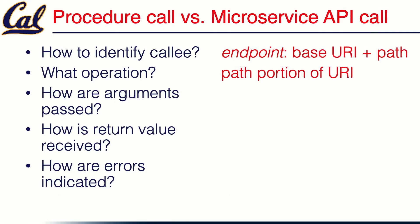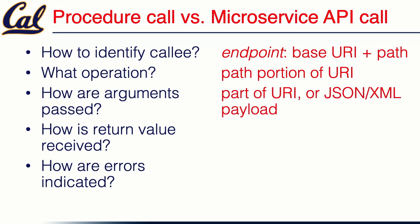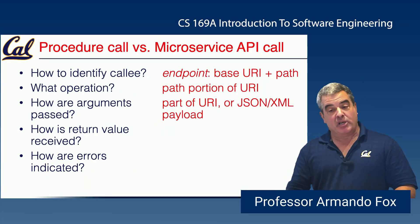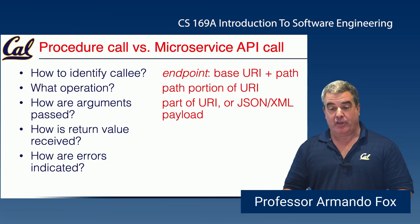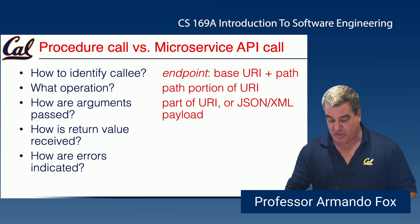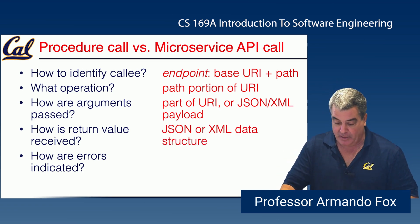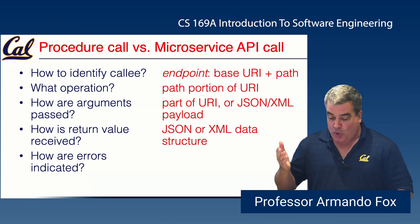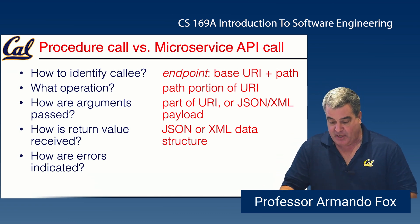What operation are you calling — what are you going to ask it to do? That is usually specified by the path portion of the URI, the part that comes right after the hostname. How do you pass arguments? There are a couple of different ways: sometimes arguments are part of the actual URI path, sometimes they're part of the query string with key-value pairs at the end of the URI, and sometimes it's just a JSON or XML payload where you're sending a big JSON data structure up to the server. It depends on the API call.